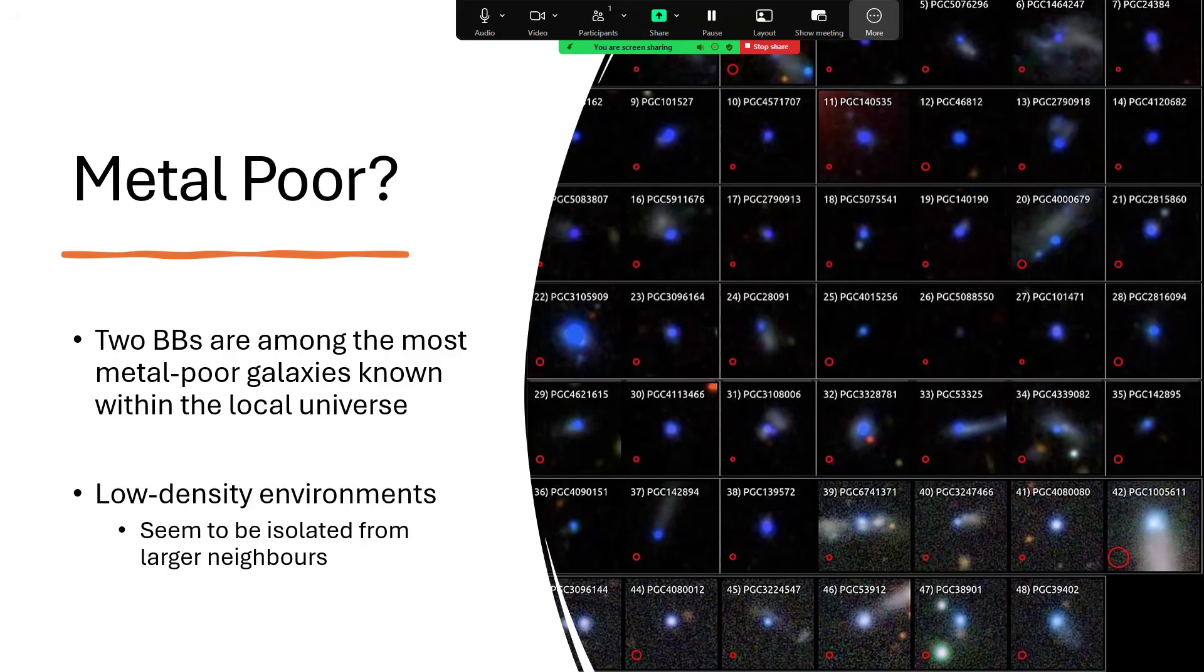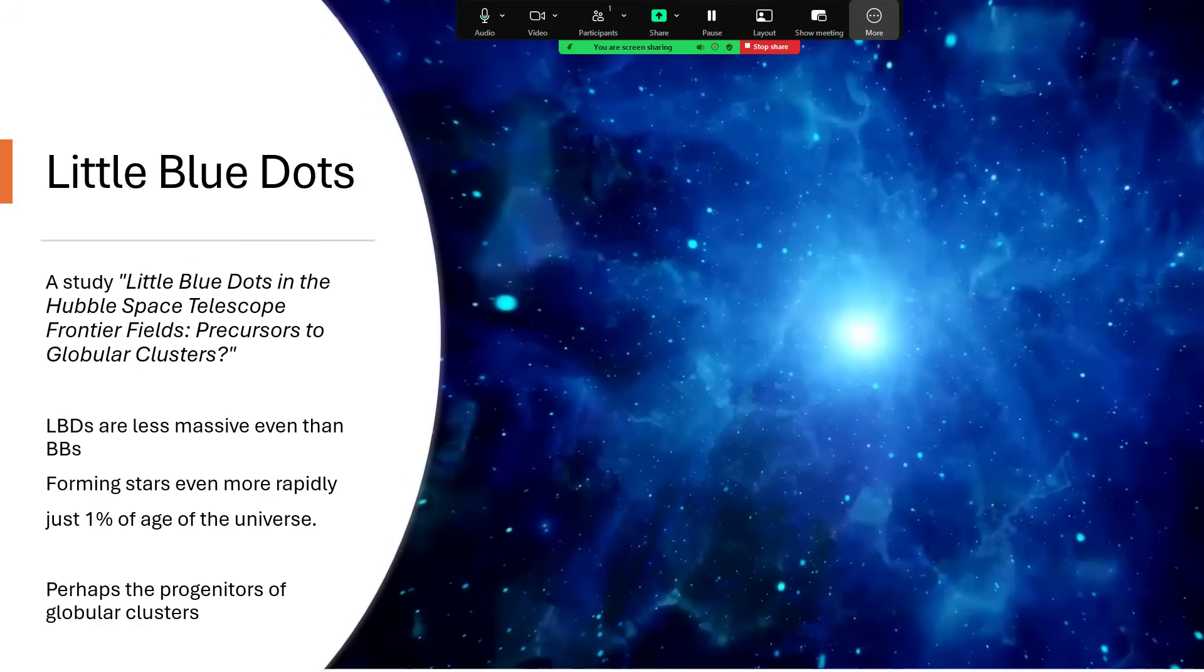And in addition to the Green Peas and the Blueberries, we have Little Blue Dots. And a paper published in 2017, I think it was, called Little Blue Dots: The Hubble Space Telescope Frontier Fields Precursors to Globular Clusters. And these Little Blue Dots are even less massive than the Blueberries, so very, very tiny indeed. And these are forming stars very rapidly and have seemed to have come into existence in just the last 1% of the age of the universe.